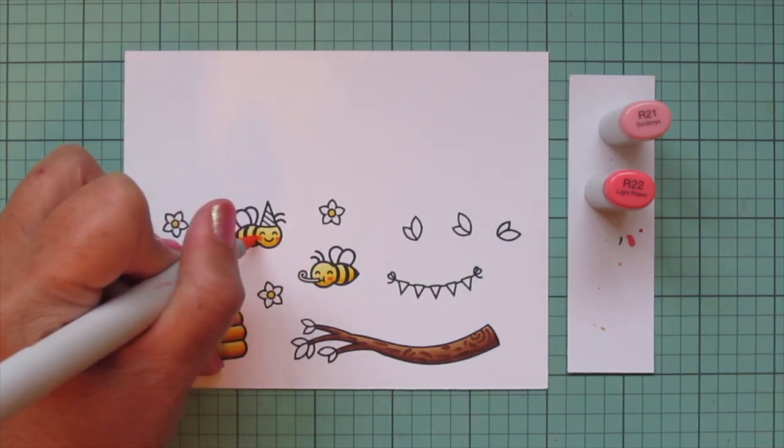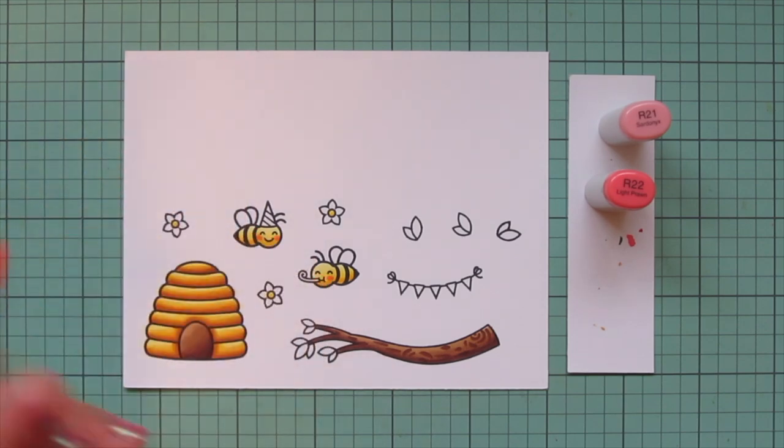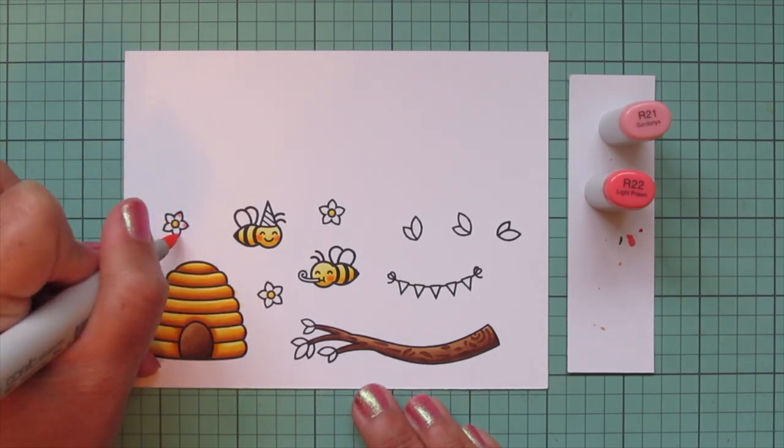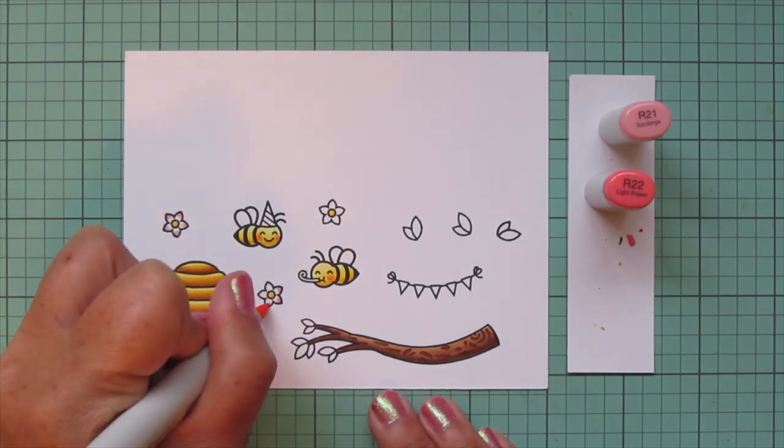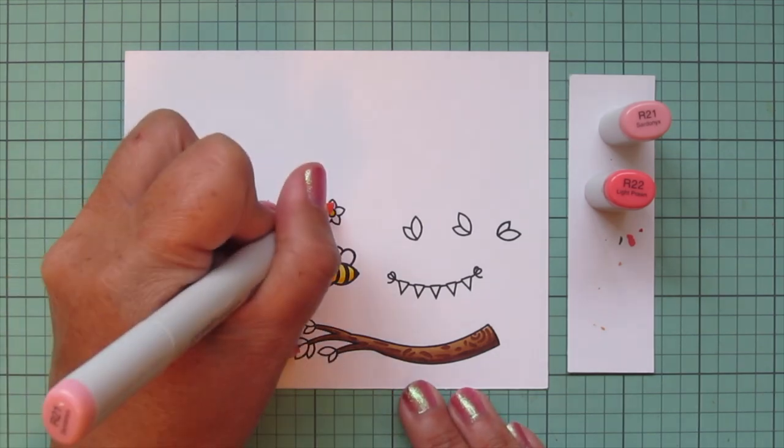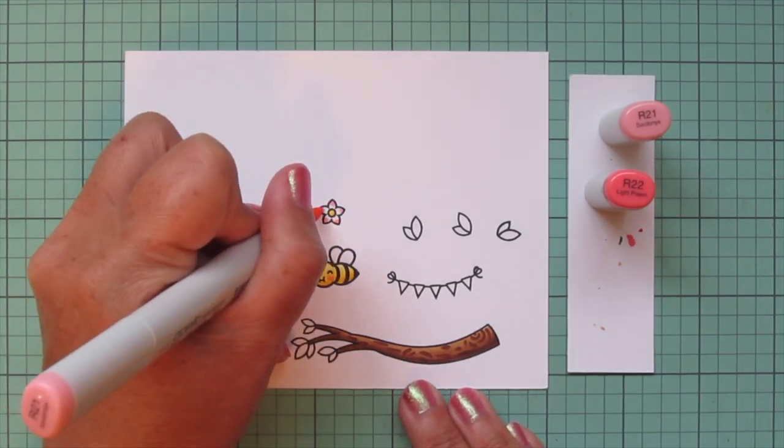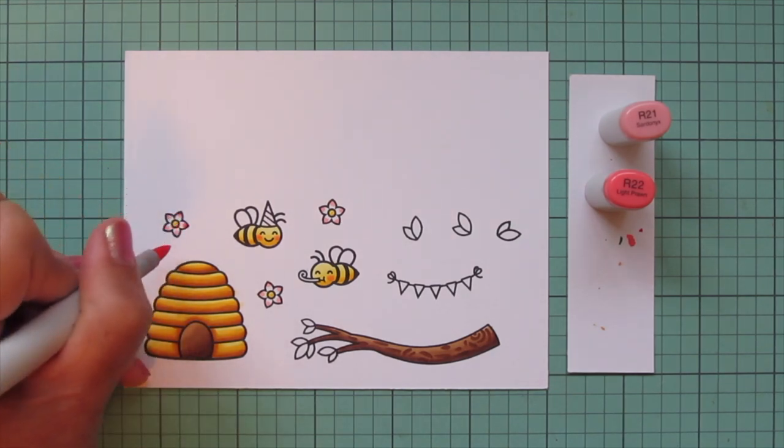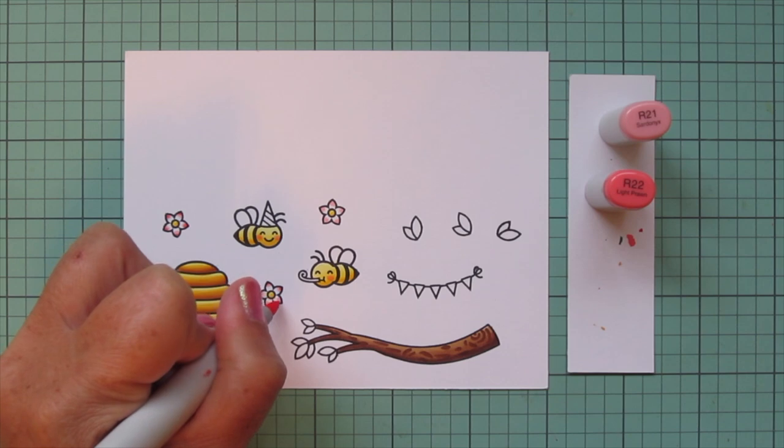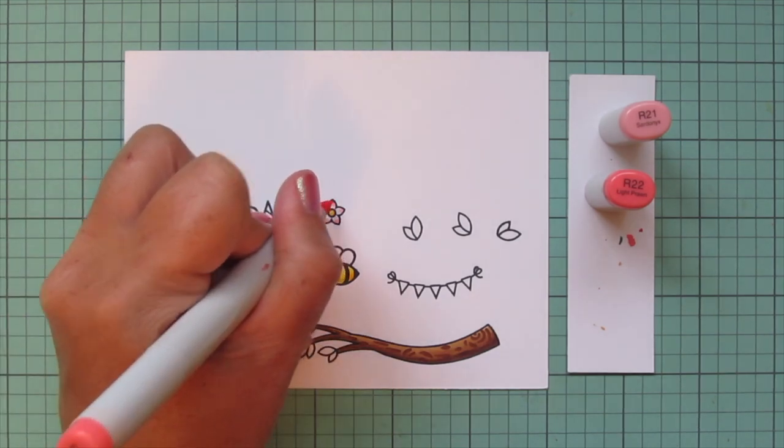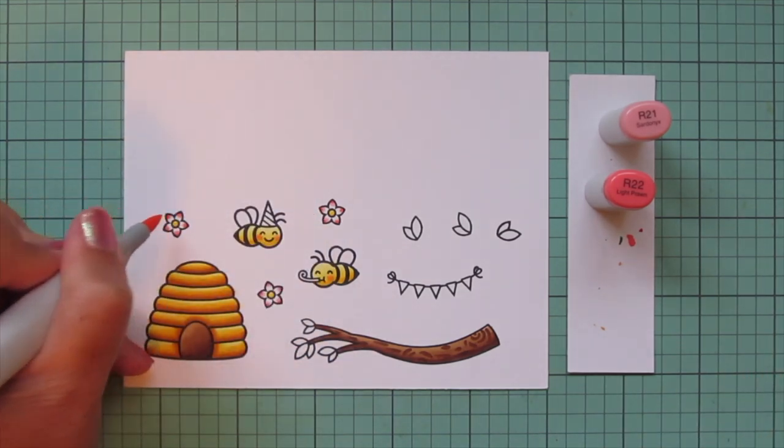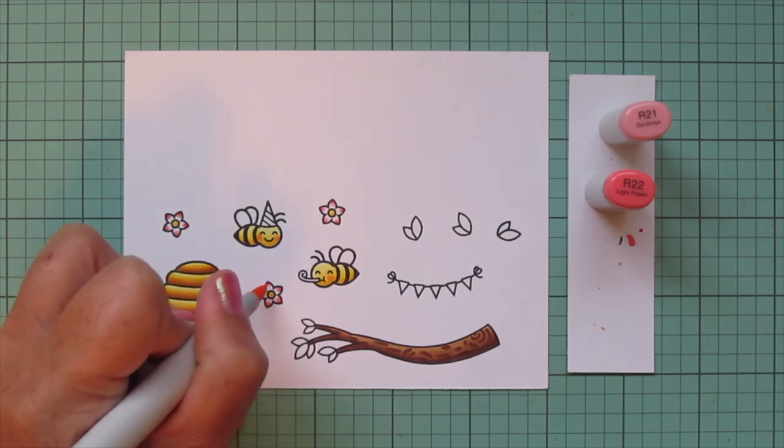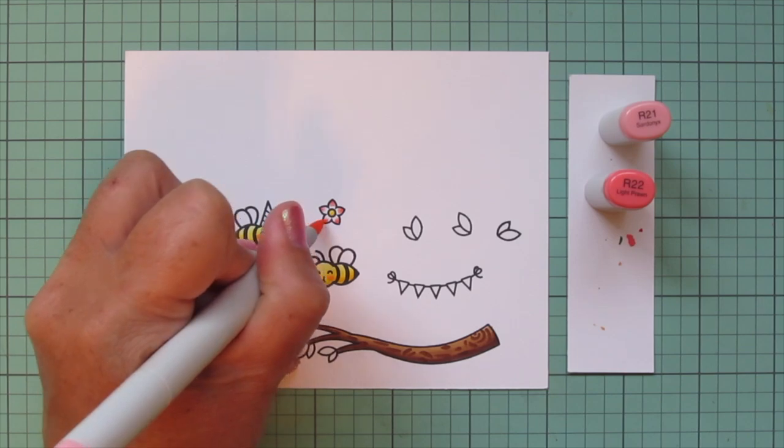You do want to let it dry if you want to do extra details on top. I'm going to add some rosy cheeks to my bees with R21 and R22, and then I'm also going to color in the little flowers. I'm adding some shading to the tips with this R21. I started with the R21 because I wasn't sure how dark I wanted to go. I did decide that I wanted just a touch of that R22 in there, so I'm adding just a little dot at the very tip of each of those petals, then I'll go back and blend that out slightly with the R21, leaving the center around the middle white.